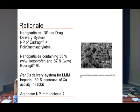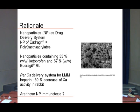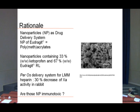We use Eudragit nanoparticles. For example, you can see here a nanoparticle containing one-third by volume of ketoprofen and two-thirds of Eudragit. We use these to deliver drugs per os — especially ketoprofen or low molecular mass heparin — and anticoagulant treatment works with this kind of delivery in rabbits.